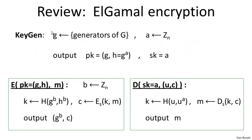Let me start by reminding you how the Elgamal encryption system works. In key generation, Elgamal picks a random generator, a random exponent from Z_n, and then the public key is simply the generator and the element G to the A, whereas the secret key is simply the discrete log of H base G — this value A.